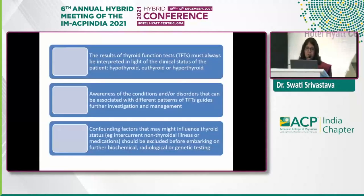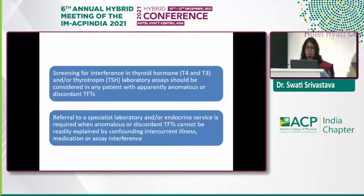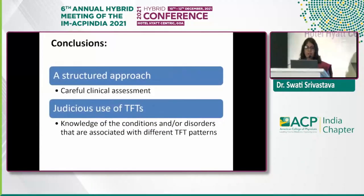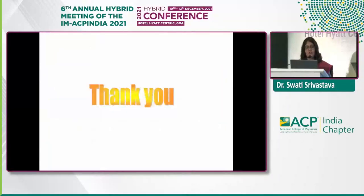In summary: thyroid function test results must always be interpreted in the light of the clinical status of the patient. Awareness of conditions associated with different TFT patterns guides further investigation and management. Confounding factors such as intercurrent non-thyroidal illness and medications must always be kept in mind before pursuing extensive biochemical, radiological, or genetic testing. Screening for assay interference should be considered, and referral to specialist endocrine services is required when TFTs remain discordant. A structured approach, careful clinical assessment, judicious use of TFTs, and knowledge of disorders associated with different TFT patterns enables most results to be reliably interpreted, avoiding inappropriate investigations and treatment.